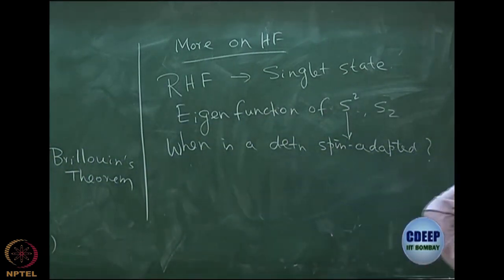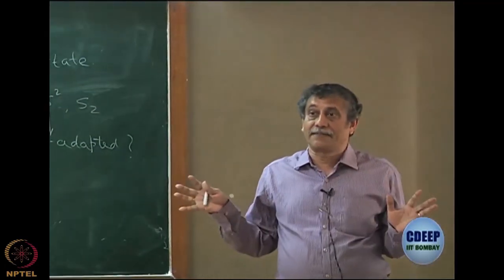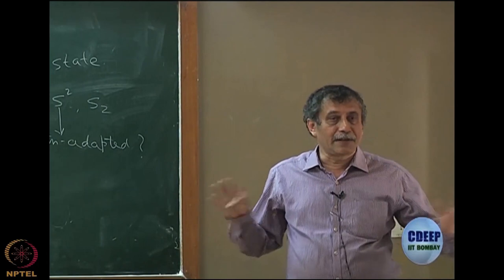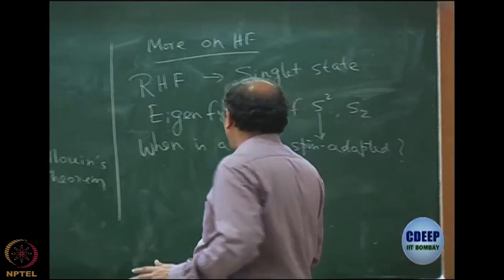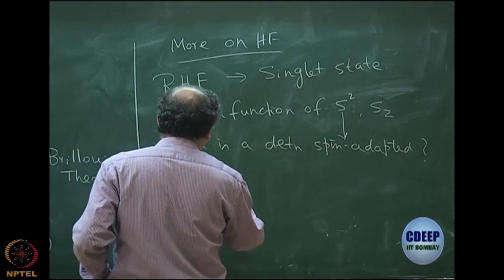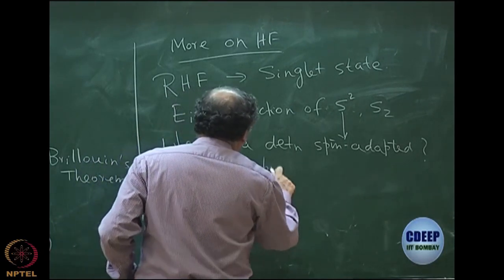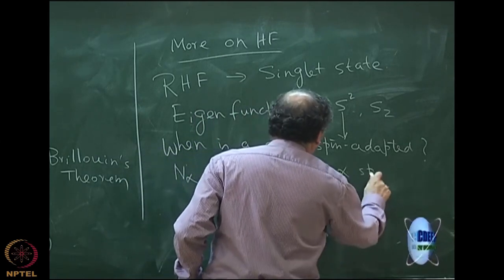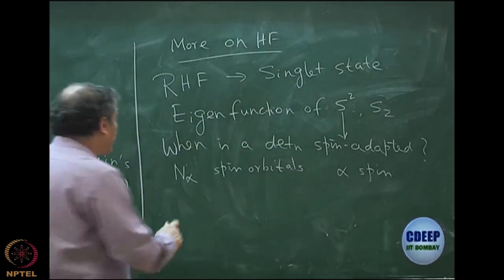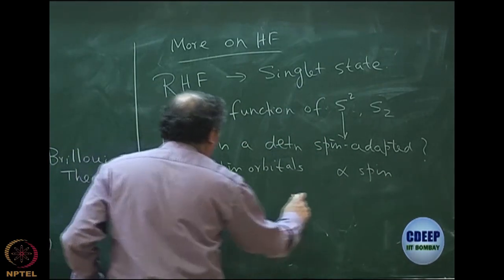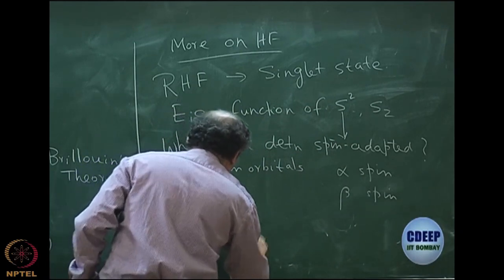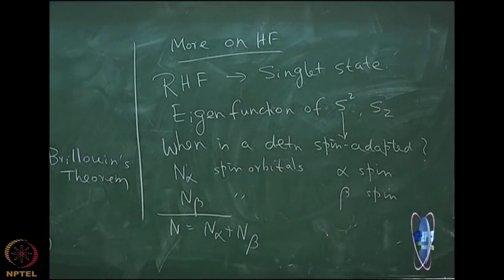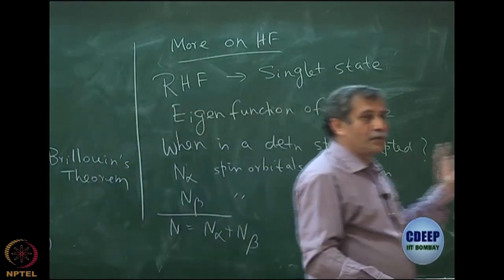When discussing spin adaptation, we have to worry about what kind of spin the orbitals have - how many are alpha spin, how many are beta spin. We have to write not in terms of general spin orbitals, but a space part with alpha and beta attached. Let us assume that in a determinant we have n_alpha spin orbitals of alpha spin and n_beta spin orbitals of beta spin.